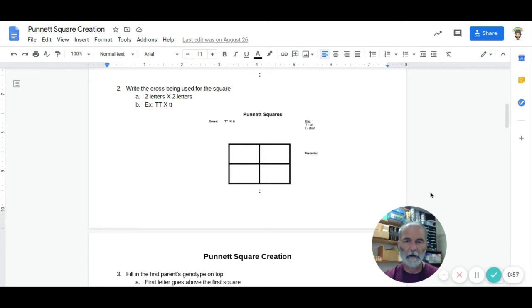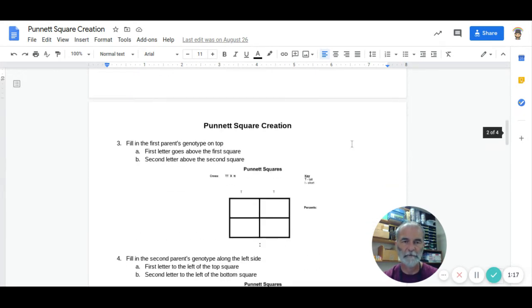The next thing you're going to do is fill in the cross. As you can see where my mouse is hovering, you're going to fill in the parents that are going to be used for this Punnett square. It's always two letters by two letters. The example we're using is big T, big T, times little t, little t. So, we have our key and our cross filled in.